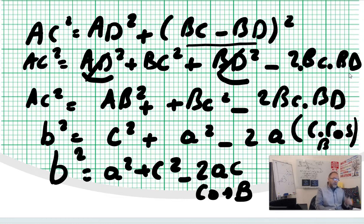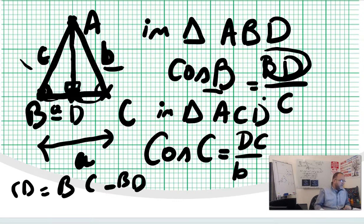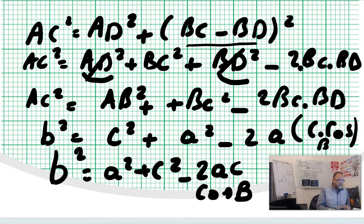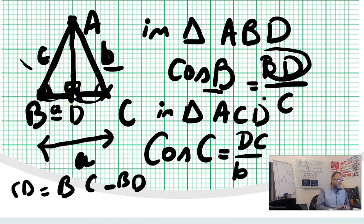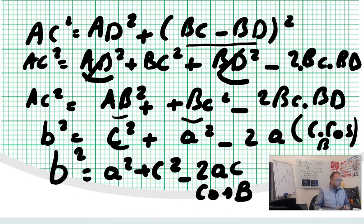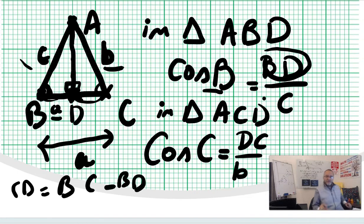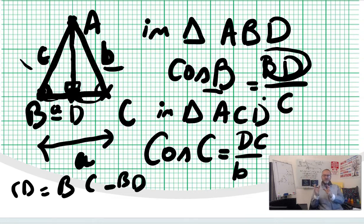All I did was replace that: I did the polynomial BC minus BD, or (a minus c) squared, which equals bc squared plus bd squared minus 2·bc·bd. Then ad squared plus bd squared by the Pythagorean theorem equals ab squared, which is c. So I got my c squared from ab squared, and I was left with bc squared minus 2bc times bd.